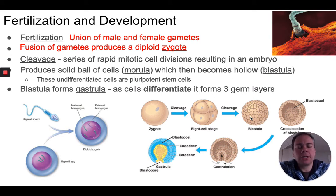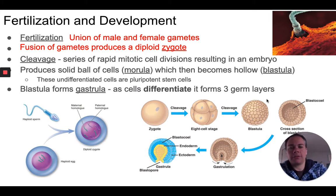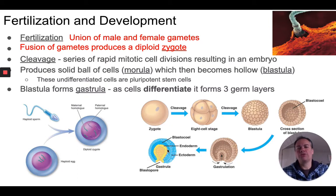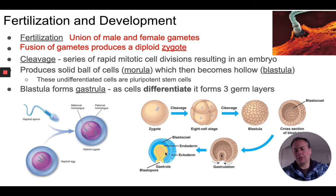Differentiation is the process when cells start to take on a specific role or job. That process takes place early on in embryonic development. The hollow ball of cells called the blastula starts to form an indentation — this stage is called the gastrula. Once this happens, cells start to differentiate and take on specific roles, forming what are called the three germ layers: the endoderm, the ectoderm, and the mesoderm.